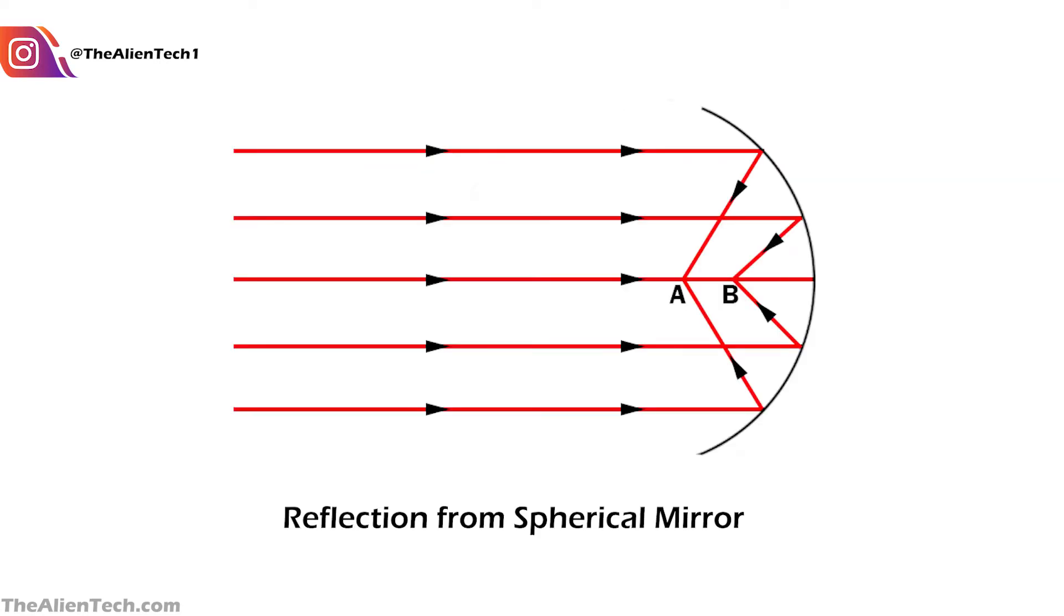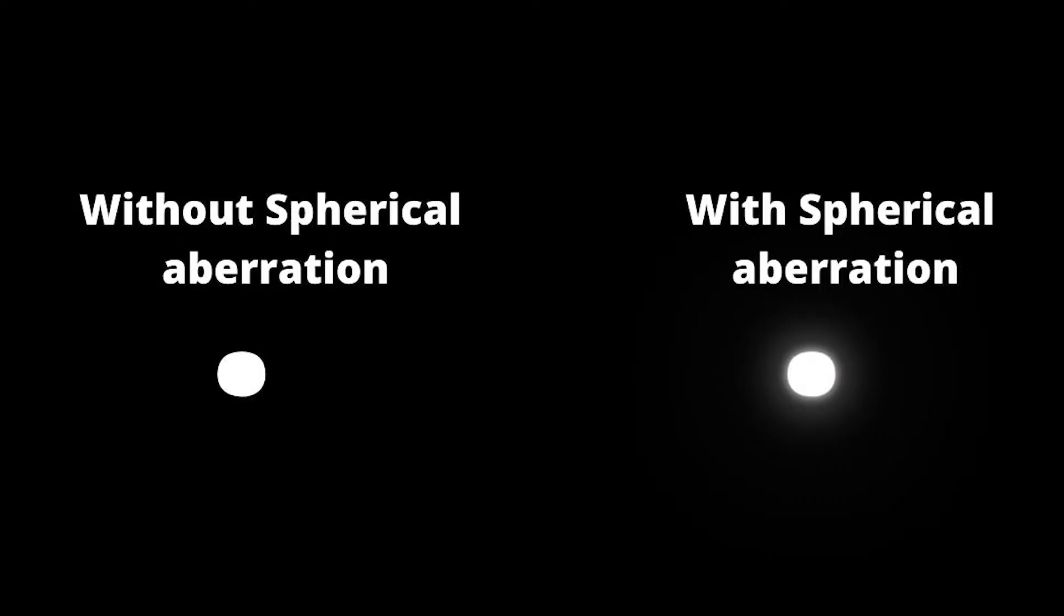When parallel light rays fall on the concave mirror, the reflected light will not focus on a single point. Instead, it will focus on multiple points. Because of this, you will notice the spherical aberrations in the images.